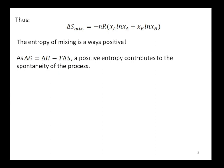As delta G equals delta H minus T delta S, a positive entropy contributes to the spontaneity of the process. That means delta S being positive makes delta G being negative.